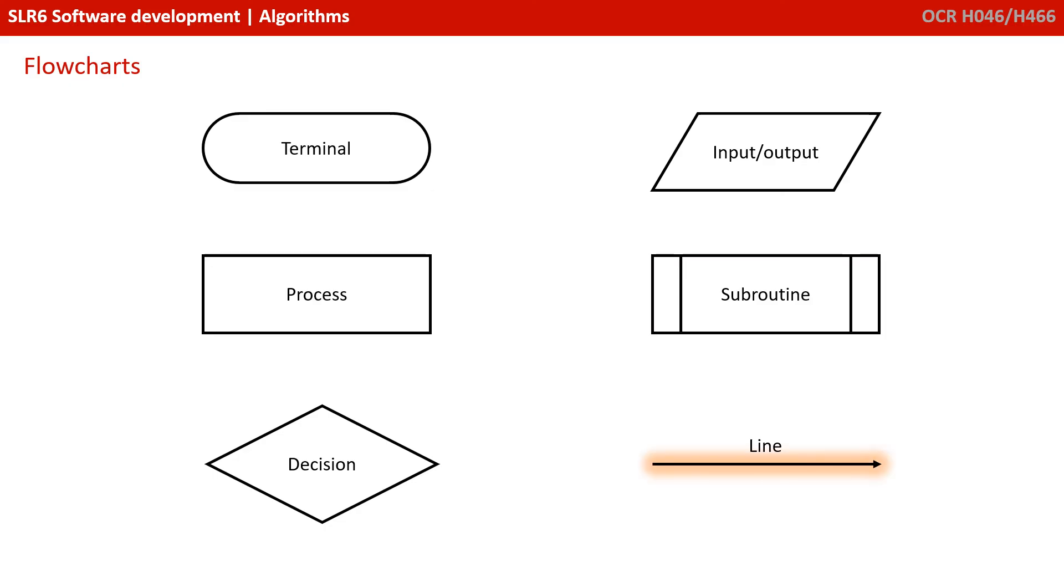Finally, you have a line, and the purpose of the line with an arrow represents the control passing between connected shape. It's the flow of the algorithm.